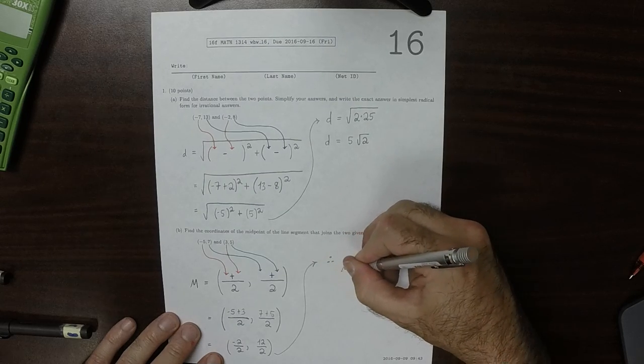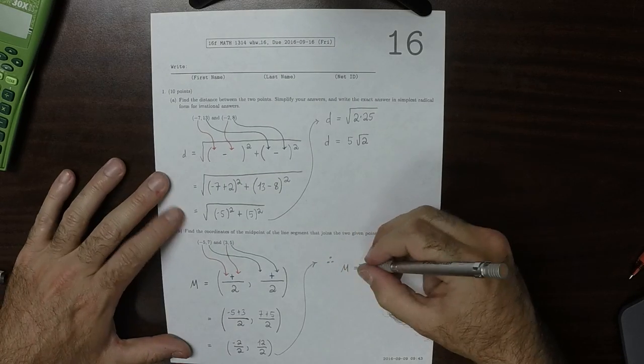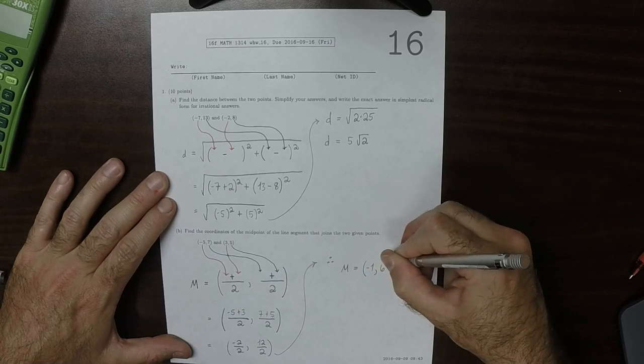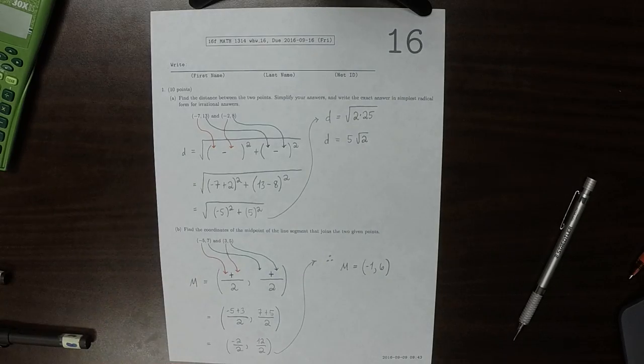And therefore, the midpoint is negative 1, comma, 6.